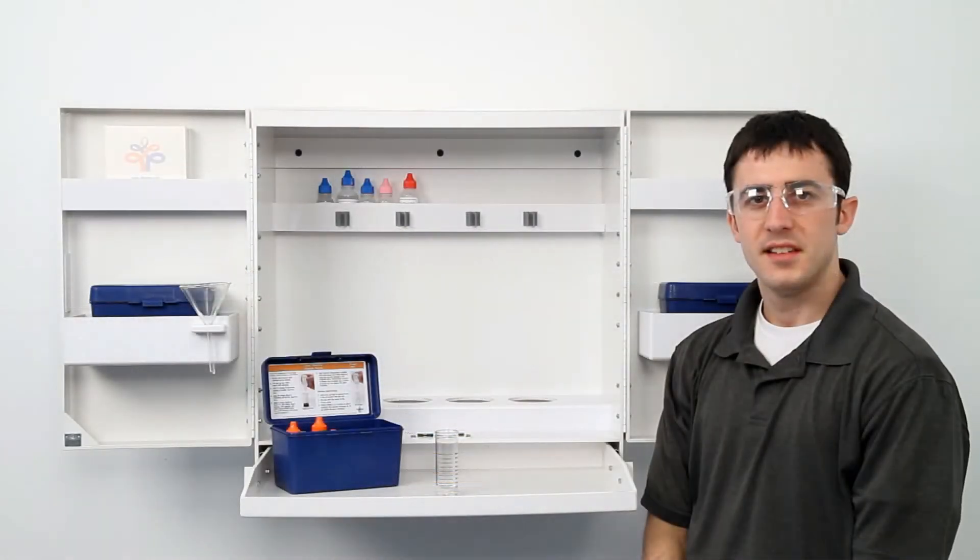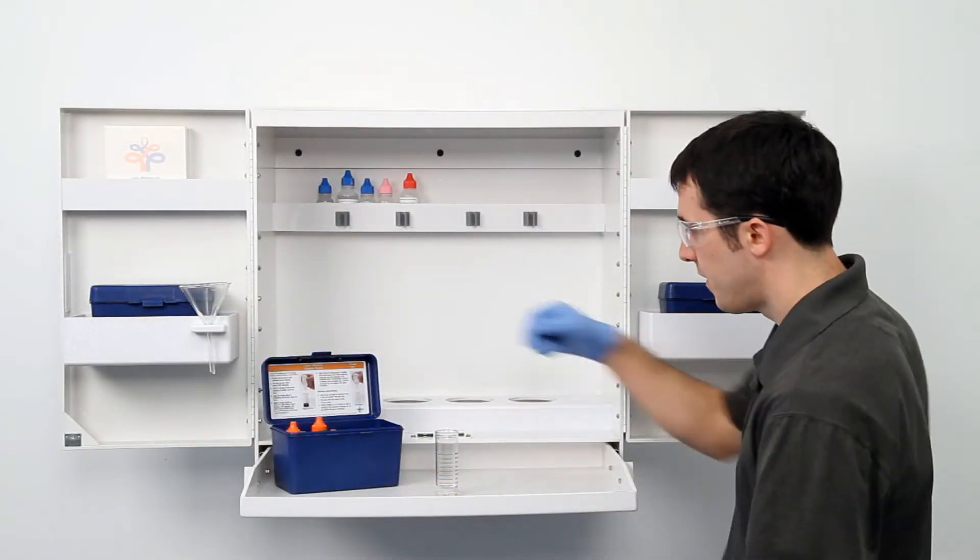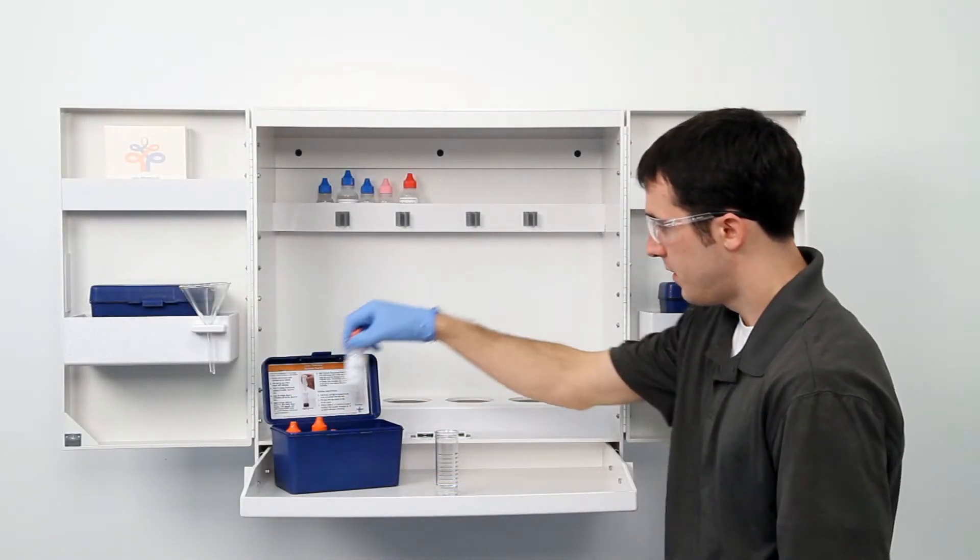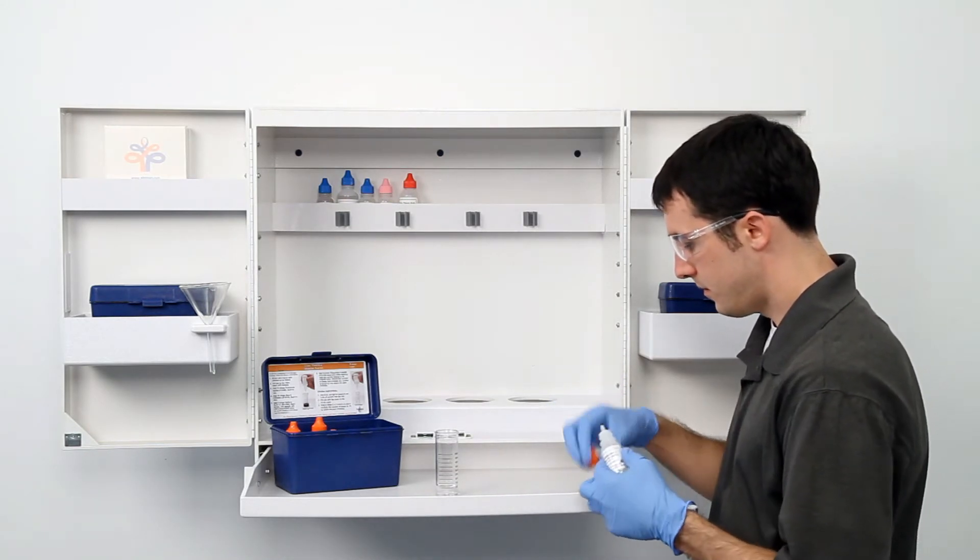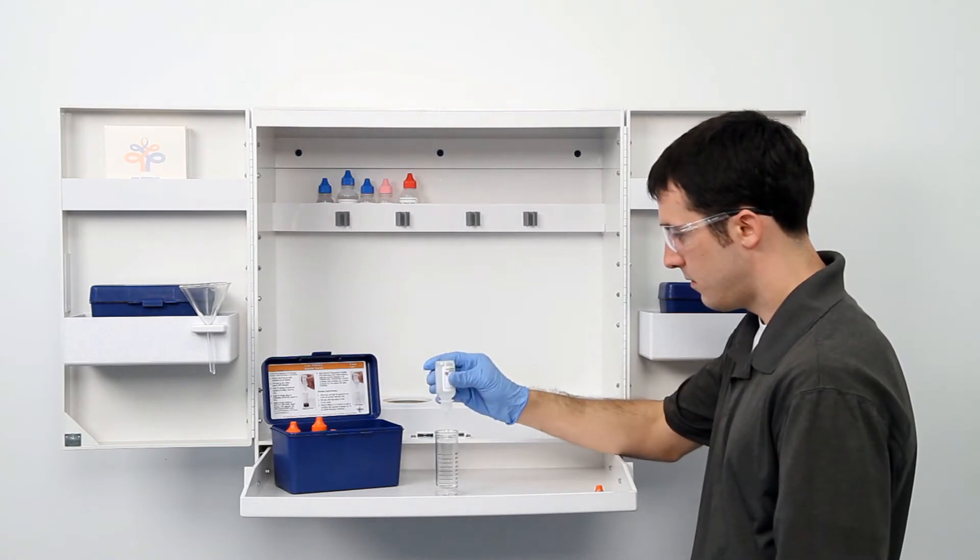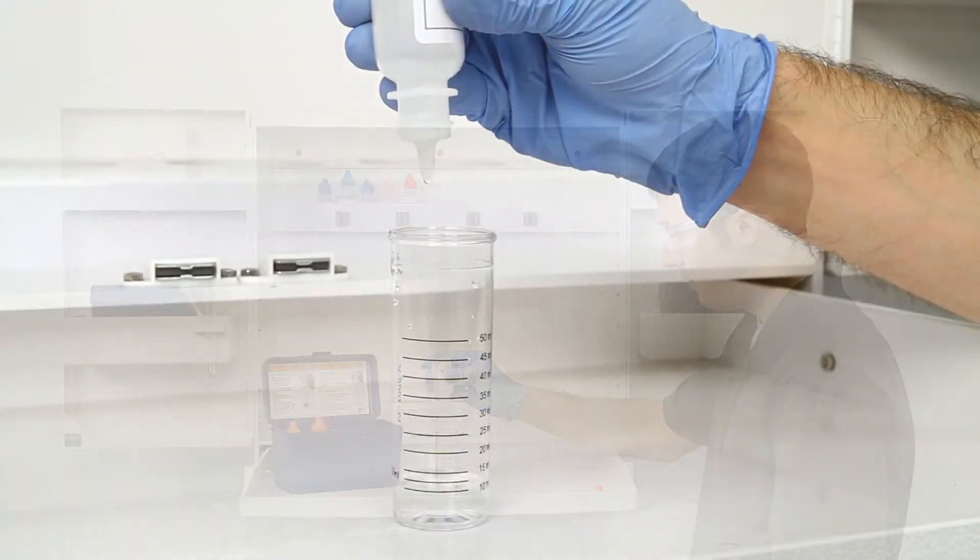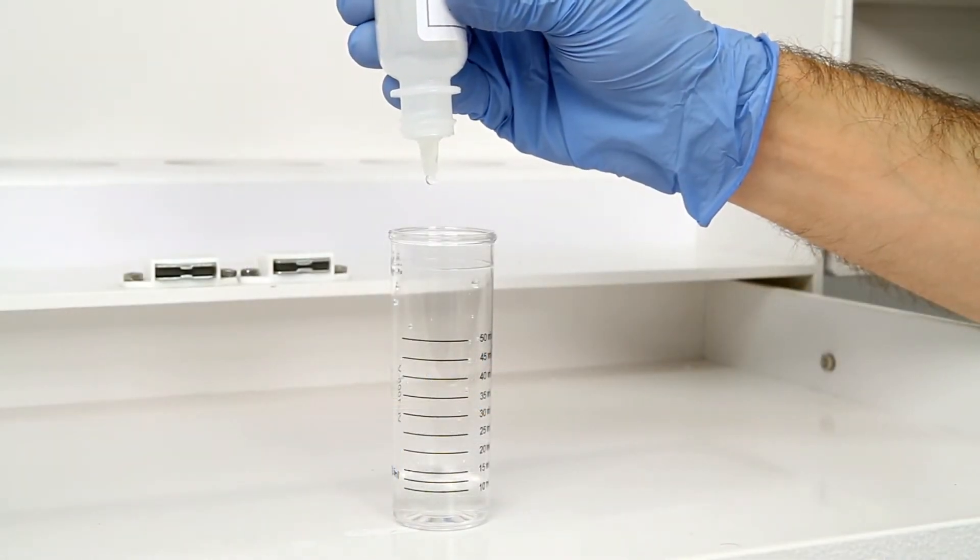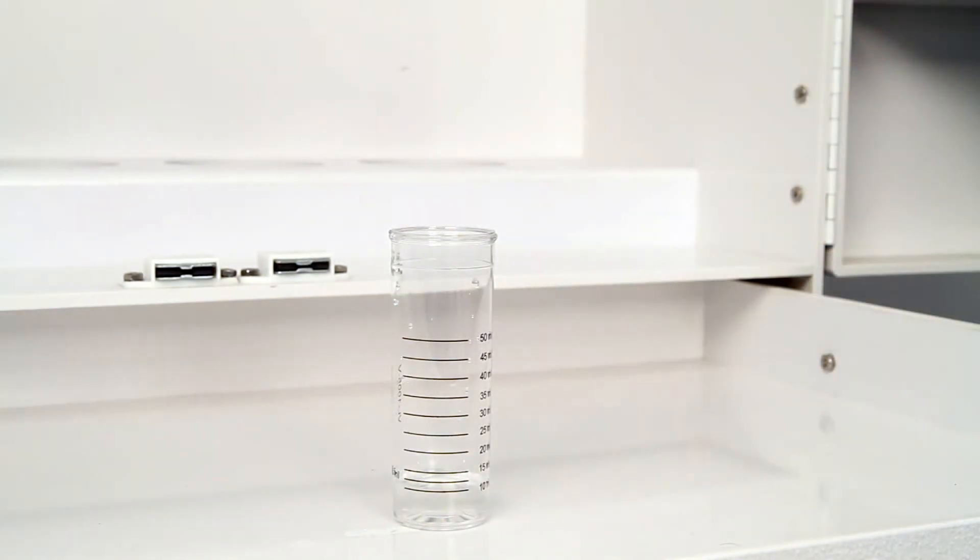The next step is to add five drops of starch indicator. Hold the bottle vertically and remember to swirl the vial for five seconds after the addition of each reagent. If the chlorine concentration is high, the sample may turn slightly blue-black at this point.